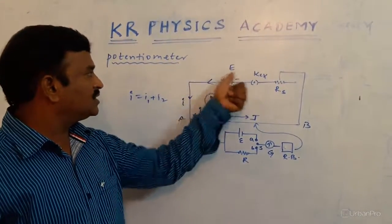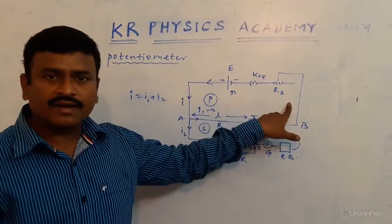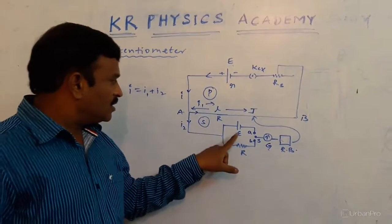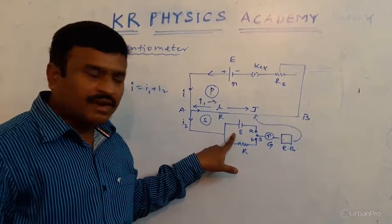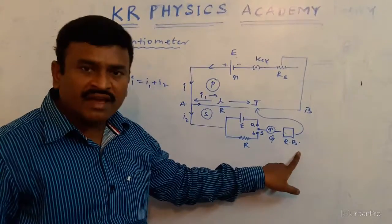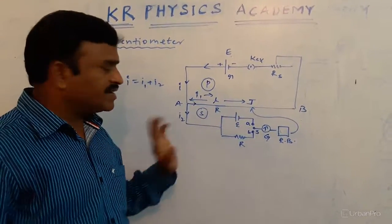In the primary circuit, source cell, key, and rheostat are connected. In the secondary circuit, an unknown cell whose EMF is to be determined, galvanometer, high resistance, and jockey are connected in series.